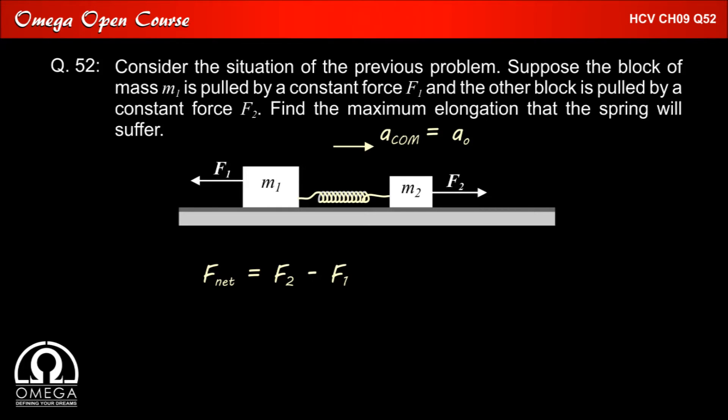Therefore the net force on the system is F2 minus F1 towards right side. Now acceleration of center of mass is given by net force divided by total mass. Therefore A0 is equal to F2 minus F1 divided by M1 plus M2.